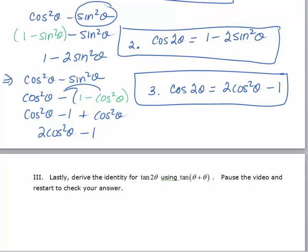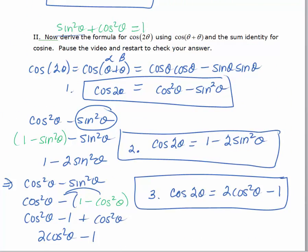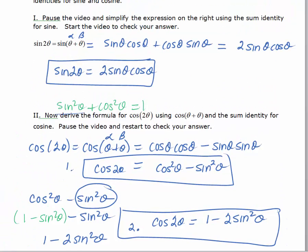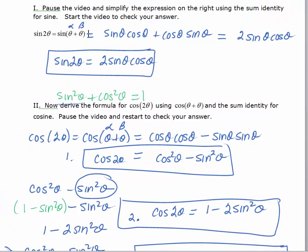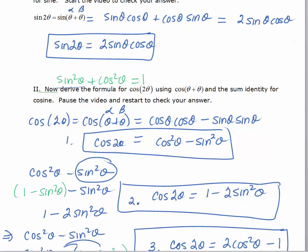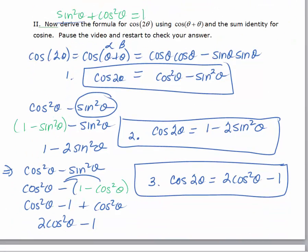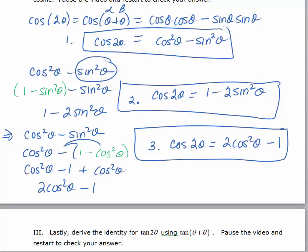So looking back: for sine, there was only one form. We used the sum formula to derive the sine of a double angle and got our first identity. For cosine, there are actually three separate versions of the identity — one we get by using the cosine of a sum, and the other two by using Pythagorean identity substitutions.